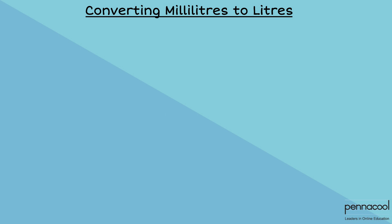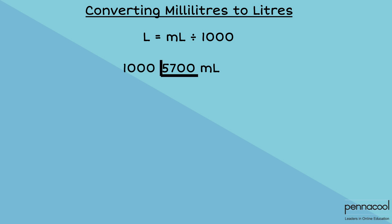We can represent capacity in a combination of liters and milliliters. When given a measurement in milliliters, we can divide it by 1000. The quotient will be represented in liters and the remainder will be left in milliliters. For example, if we were to represent 5700 milliliters in liters and milliliters, we first divide by 1000. This gives us 5 with a remainder of 700, representing 5 liters and 700 milliliters.